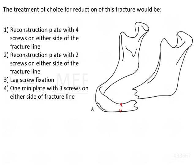One major disadvantage of reconstruction plates is that, being load-bearing fixations, they can cause avascular or atrophic necrosis of the bone. This is because one of bone's most important properties is remodeling based on function. Since the bone is not bearing any masticatory forces, it cannot remodel and undergoes atrophy and necrosis. Therefore, when using a load-bearing fixation, we must ensure the fixation period is kept shorter and later replaced by a load-sharing fixation.